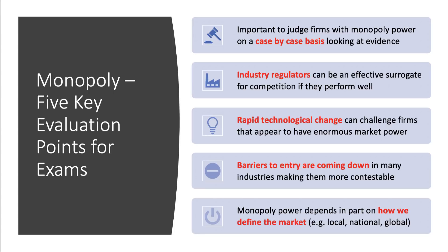We live in a world of rapid, fast-changing technology, so even firms that appear to have a monopoly today can sometimes see that monopoly power erode and disappear quickly — we've seen that in many markets, for example black cab taxis in London. Barriers to entry in many markets are coming down, making markets more contestable. Crucially, monopoly power also depends on how we define the market — whether it is local, national, regional, or global. Market definition does matter.